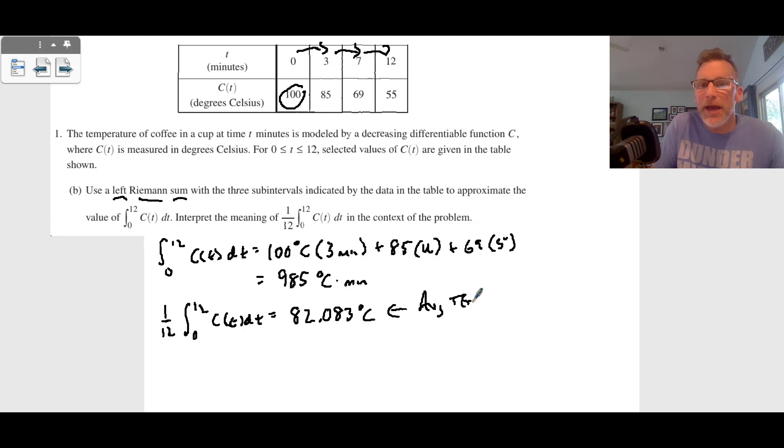This is the average temperature of our coffee cup, average temperature of the coffee in the cup from time equals zero minutes to time equals 12 minutes. So that's the average temperature of the coffee in the cup. That was part B.